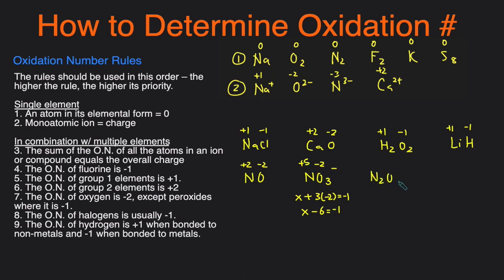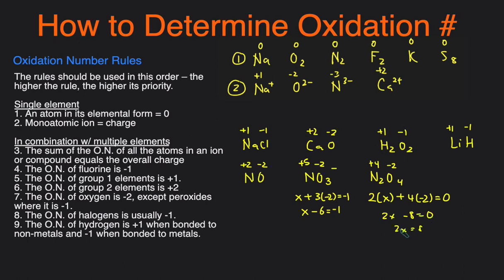Next, N₂O₄. We know O is −2, and we solve for N. This compound has no overall charge, so it's neutral. Setting up the algebraic expression: 2X (two nitrogens, each with unknown oxidation number X) plus 4 × (−2) equals zero. So 2X − 8 = 0, giving 2X = 8, so X = 4. Each nitrogen has an oxidation number of +4.